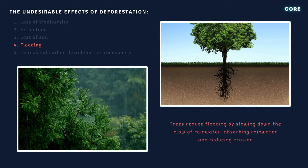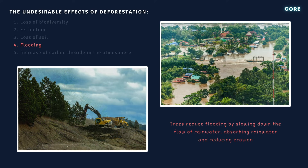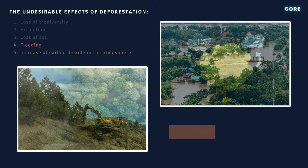Number four: trees play a vital role in regulating water flow and preventing flooding. They slow down the movement of water and their root systems allow it to be gradually absorbed into the ground. Deforestation disrupts this natural balance, leading to increased surface runoff, soil erosion, and the potential for more frequent and severe floods.